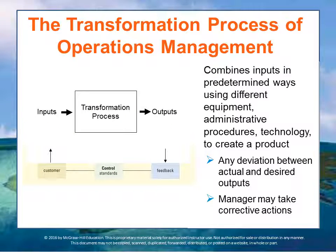The systems model talks about inputs going through a transformation process, creating outputs. The outputs go into a feedback process where you look at the control standards and make sure the customer is happy with the outputs. You improve the input process, the transformation process, and the output process. There's a continuous flow of information, goods, and services through this transformation process.